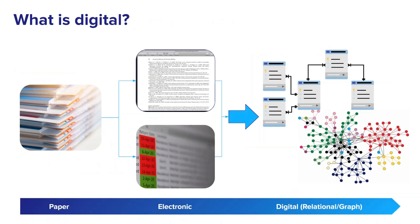Data becomes digital when it becomes atomic. In other words, when a data point can be separately addressed, it has become digital. The diagram on the right shows a relational database where digital records are linked, or the knowledge graph where individual elements of information can be depicted as connected webs of relationships. Each record or each node is separately addressable and connected to other similar types of objects.